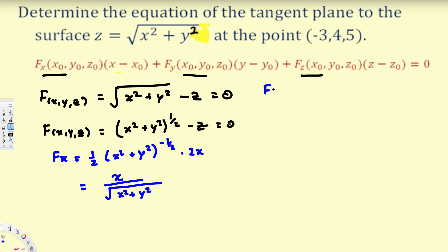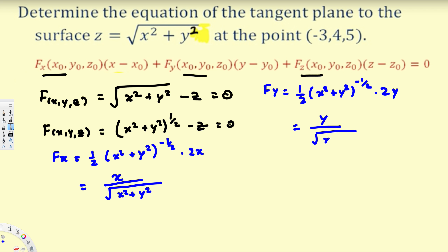The partial derivative f_y is the same thing — the only difference is that instead of 2x we have 2y from the chain rule: (1/2)(x² + y²)^(−1/2) · 2y, which simplifies to y / √(x² + y²). For the partial derivative with respect to z, the square root term is treated as a constant so it's 0, and the −z term gives us just −1.